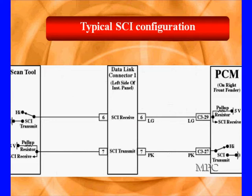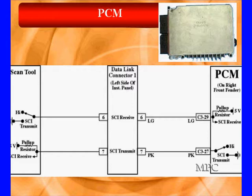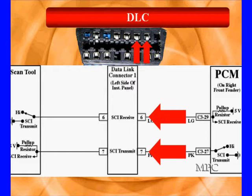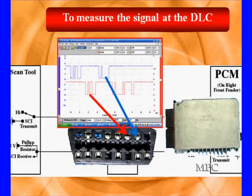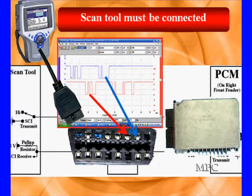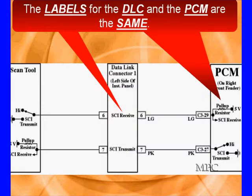This is the typical configuration. The PCM is on the right, and it goes to the data link connector, DLC. The DLC is named the same as the PCM signals. The two pins we're talking about here are six and seven on this vehicle — remember, this is not standard, so get a specific diagram. The scan tool is on the left and plugs into the DLC. The labels on the PCM are the same as the labels on the data link connector, which are the opposite of what the labels are on the scan tool.